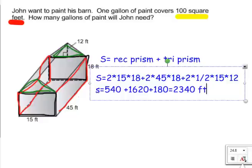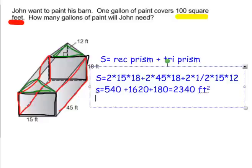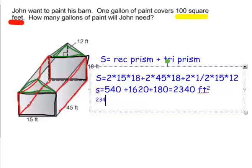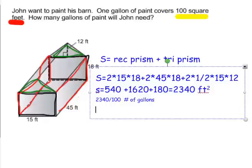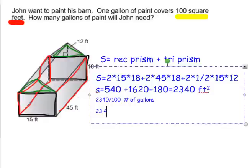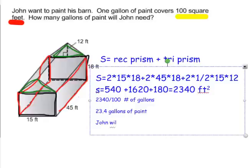The question doesn't ask for square feet — it asks how many gallons of paint John needs. So we take 2,340 and divide by 100, which is the same as moving the decimal two places. That gives 23.4 gallons. Since you can't buy partial gallons, we round up — John will need 24 gallons of paint.